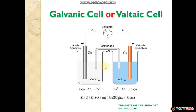The part where oxidation takes place is called the anode. Therefore, that half-cell is called the anodic half-cell. Reduction takes place in the second half-cell, which is called the cathodic half-cell.